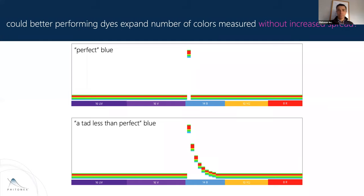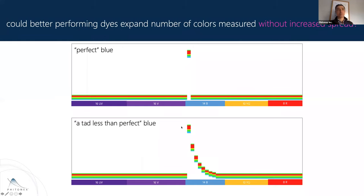If we titrate down from perfection, we'd have a tad less than perfect where we have significant signal in the primary channel with a little bit trailing off. This is the bar we'll set ourselves to, and we'll show some of the spectral clarity we have in our labels. The final point: dyes have always driven hardware development and still are. Our work pushing the limits on spectral clarity can continue to push hardware innovation, which gets us incredibly excited.